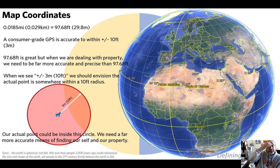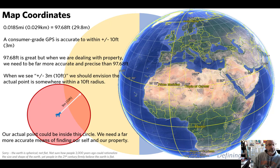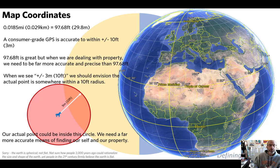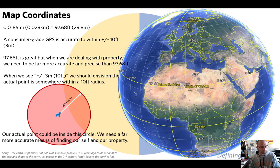Consumer-grade GPS units from Walmart are not very accurate. They may advertise plus or minus one meter accuracy, which sounds good, but a meter is about three and a quarter feet — meaning your mapped point could be within a six-foot diameter circle. That's not accurate enough for establishing property boundaries, planting hedges, or installing fences.